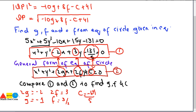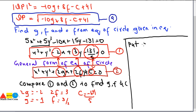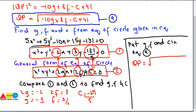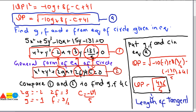Substituting G = -1, F = 3/2, and C = -31/5 into equation A: QP = √[-10(-1) + 8(3/2) - (-31/5) + 41]. Simplifying, we get QP = √(446/5). This is the length of the tangent drawn from the given point to the circle. That's all from today's lecture. Thank you.